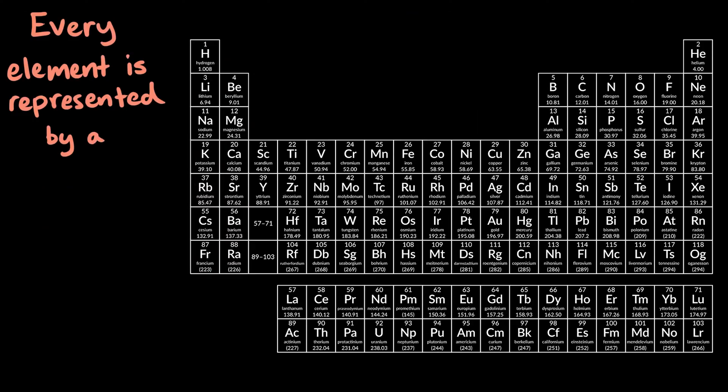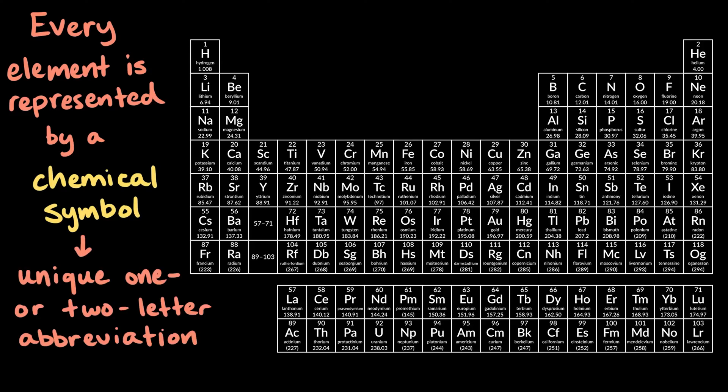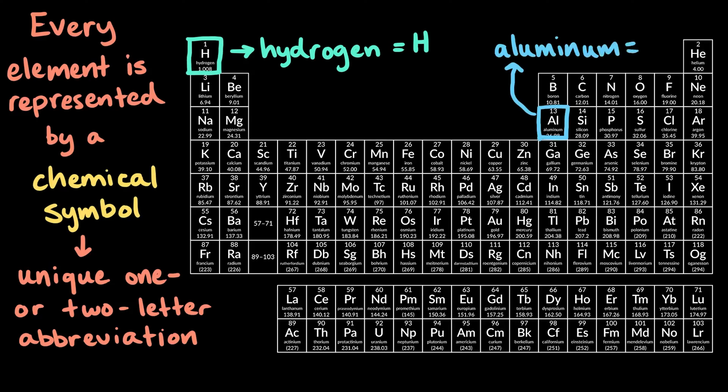Every element is represented by a chemical symbol, a unique one- or two-letter abbreviation that appears below the element's atomic number on the periodic table. Many chemical symbols are based on the English name for an element. For example, the symbol for hydrogen is H, and the symbol for aluminum is Al.